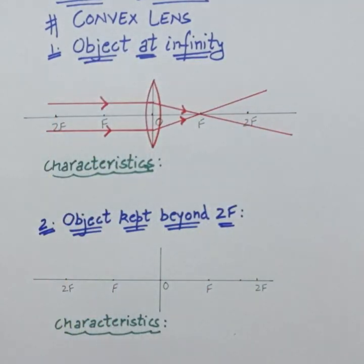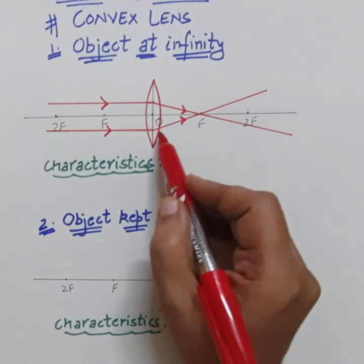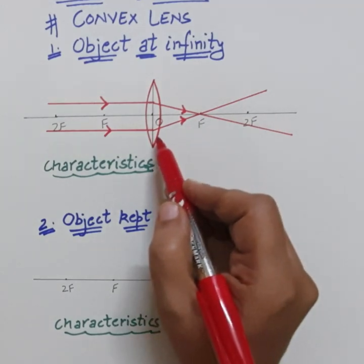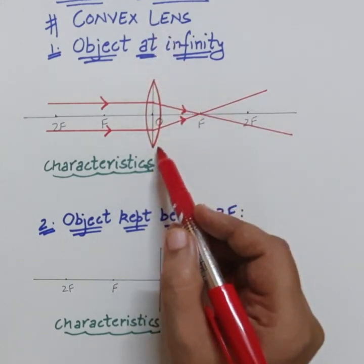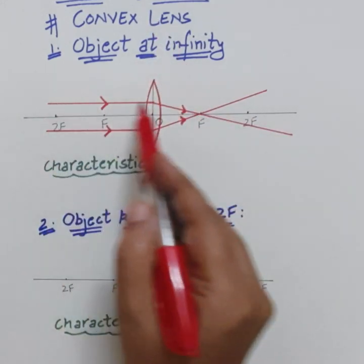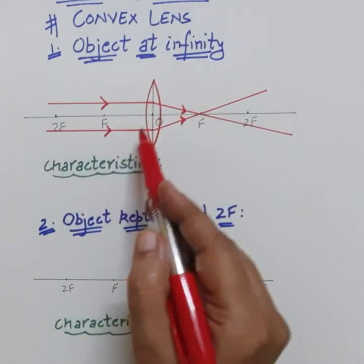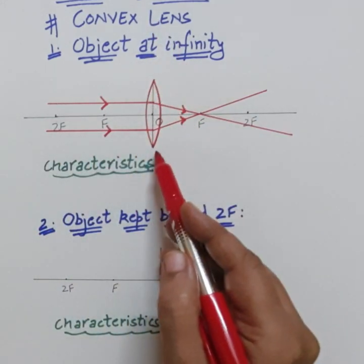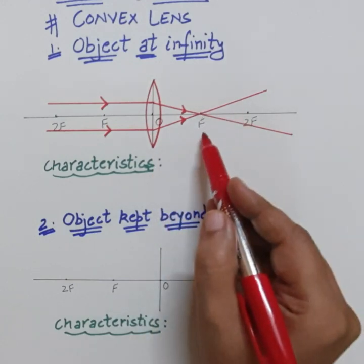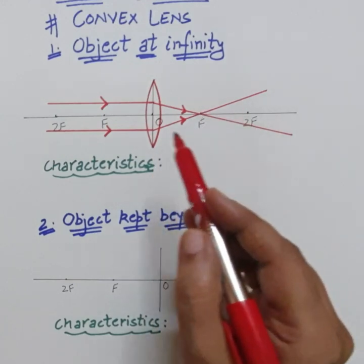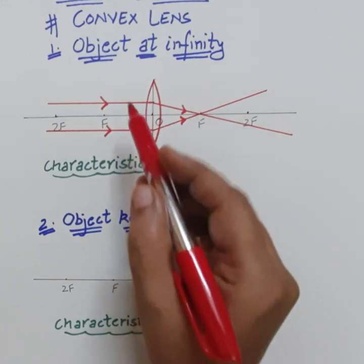This is a convex lens. This particular ray diagram can also be used to explain that the convex lens is a converging lens, because all the parallel rays after passing through the lens converge to a single point called focus.